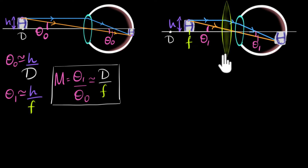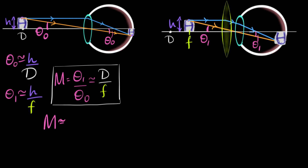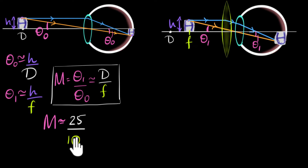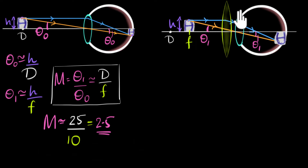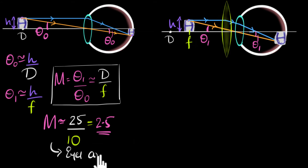Let's work with some numbers. If the focal length of our lens is about 10 centimeters, the magnification we would get is approximately d divided by f — the near point distance is about 25 centimeters, so 25 divided by 10 gives us 2.5. This means the height of the image on the retina is about two and a half times more. So the magnifying power is 2.5, and in this position, because the rays falling on our eyes are parallel, our eyes are in their most relaxed state.